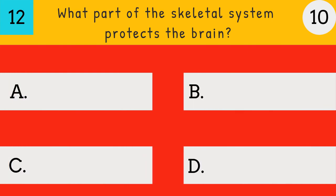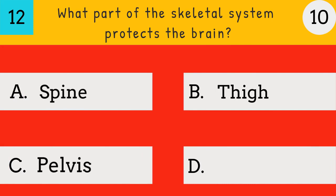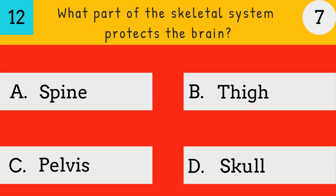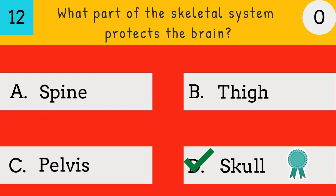What part of the skeletal system protects the brain? Spine, chin, pelvis, or skull? The answer is skull — the skull of the skeletal system protects the brain.